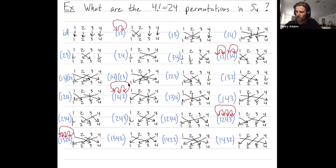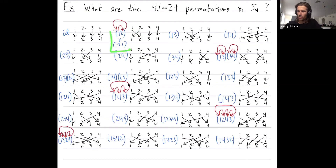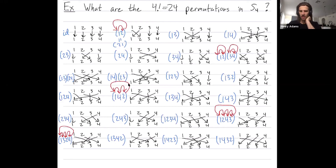This cycle (1 2) could also be written as (2 1), because it's saying the same thing: two goes to one which goes back to two. So these are two different names for the same cycle, but people usually write the smallest element first. When you have a cycle, put the smallest element in that cycle first, which is what I've done here.